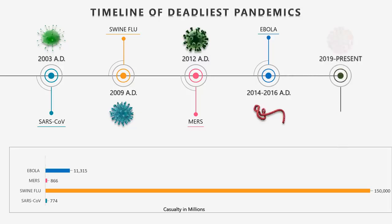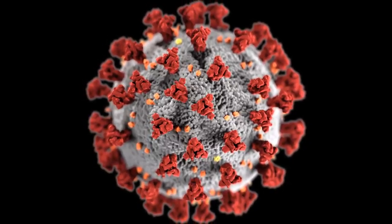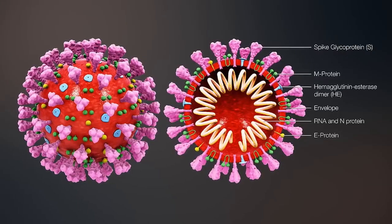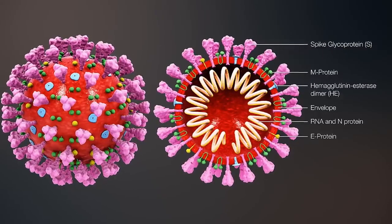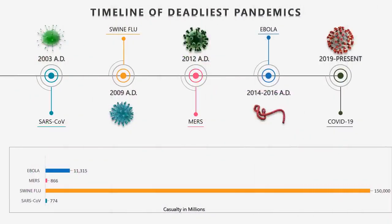At number 1: Coronavirus Disease 2020 (COVID-19). It is an infectious disease caused by a newly discovered coronavirus. Most people infected will experience mild to moderate respiratory illness and recover without requiring special treatment. Older people and those with underlying conditions like cardiovascular disease, diabetes, chronic respiratory disease, and cancer are more likely to develop serious illness. As of the recording, 13,671 deaths had been reported. The best way to prevent transmission is to stay informed, wash hands frequently, use alcohol-based hand rub, and avoid touching your face.